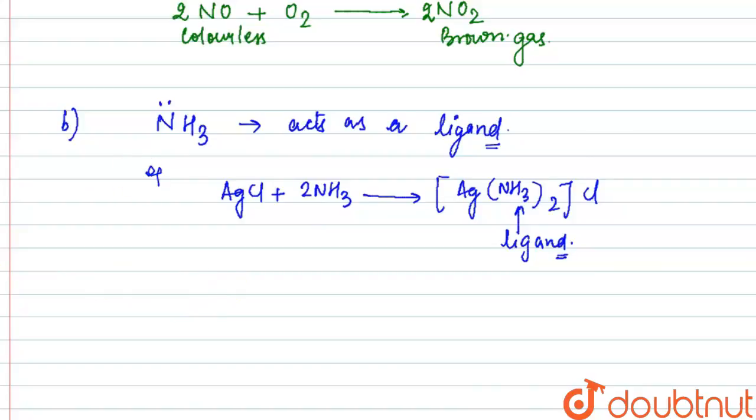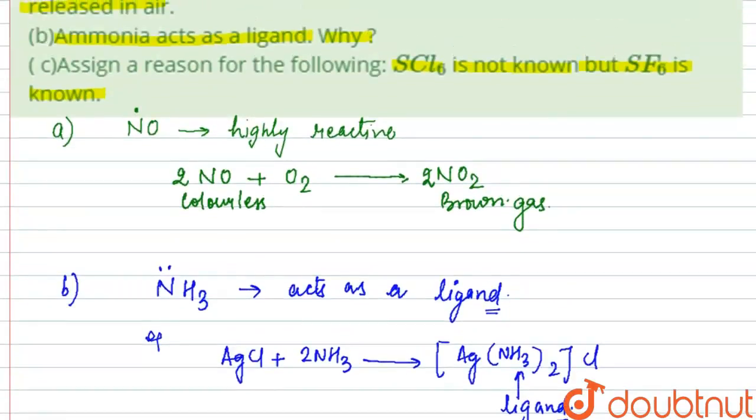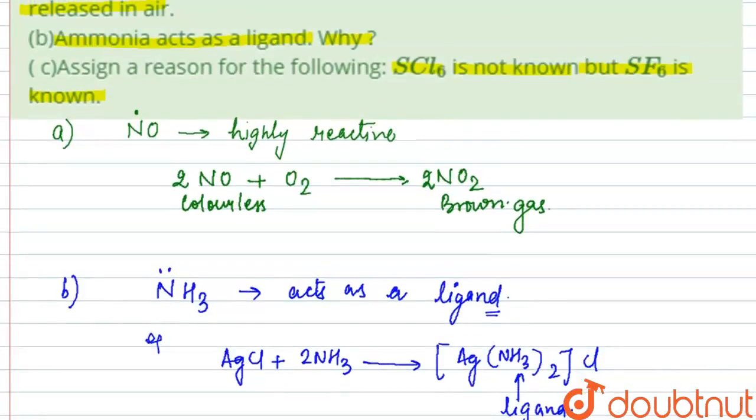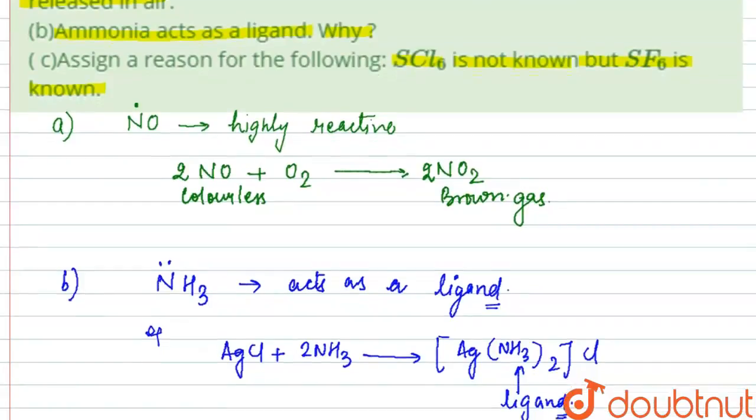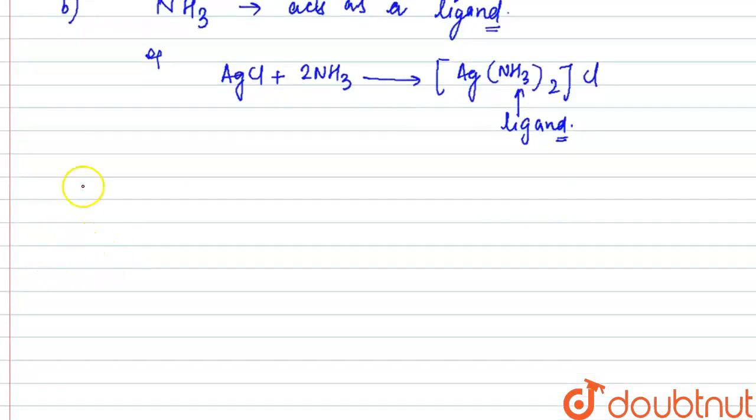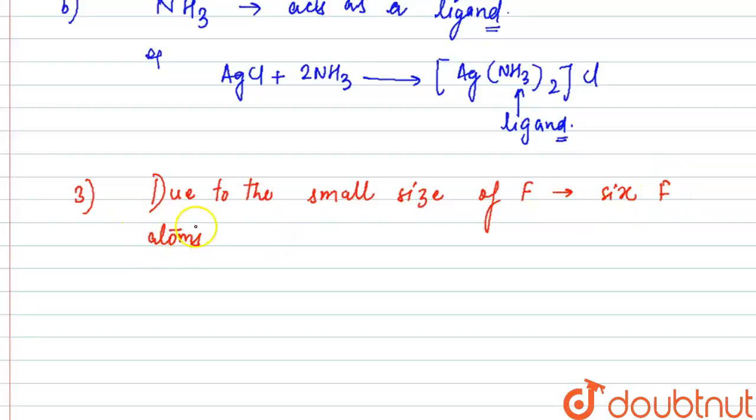Moving on to the last one - SCl6 is not known but SF6 is known. What is the reason? Due to the small size of fluorine, we can have six fluorine atoms accommodated around sulfur.